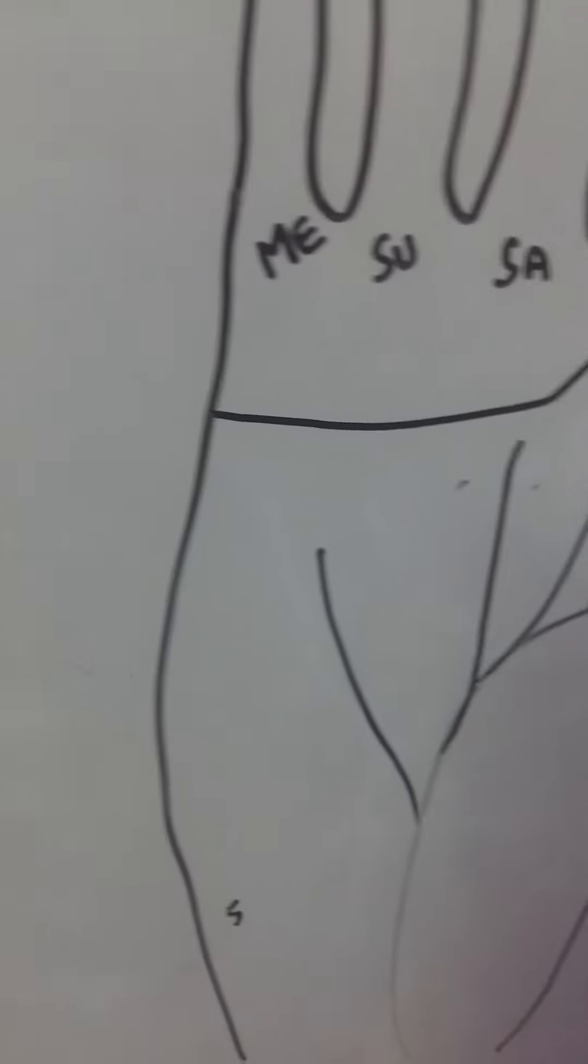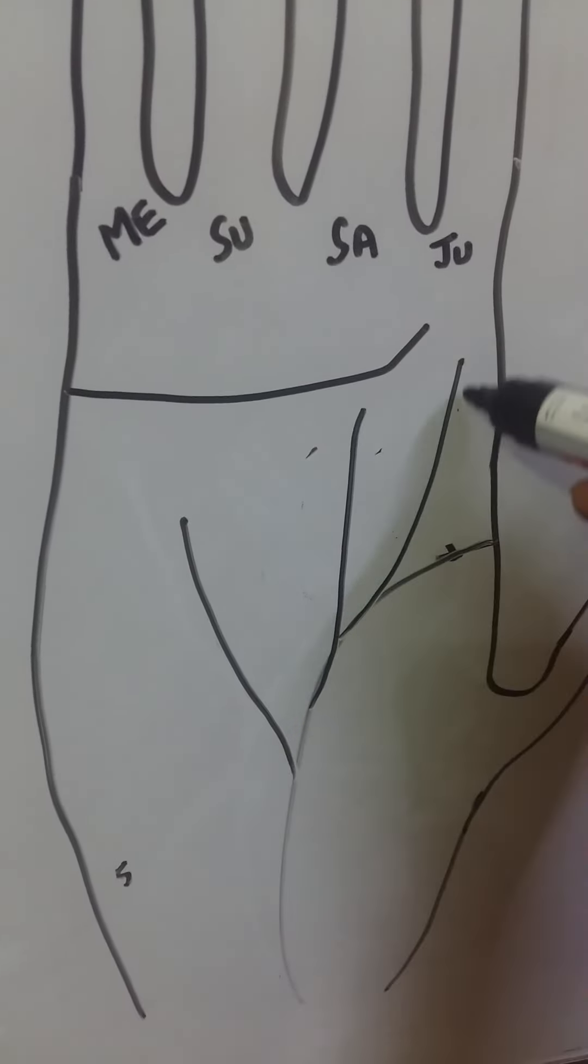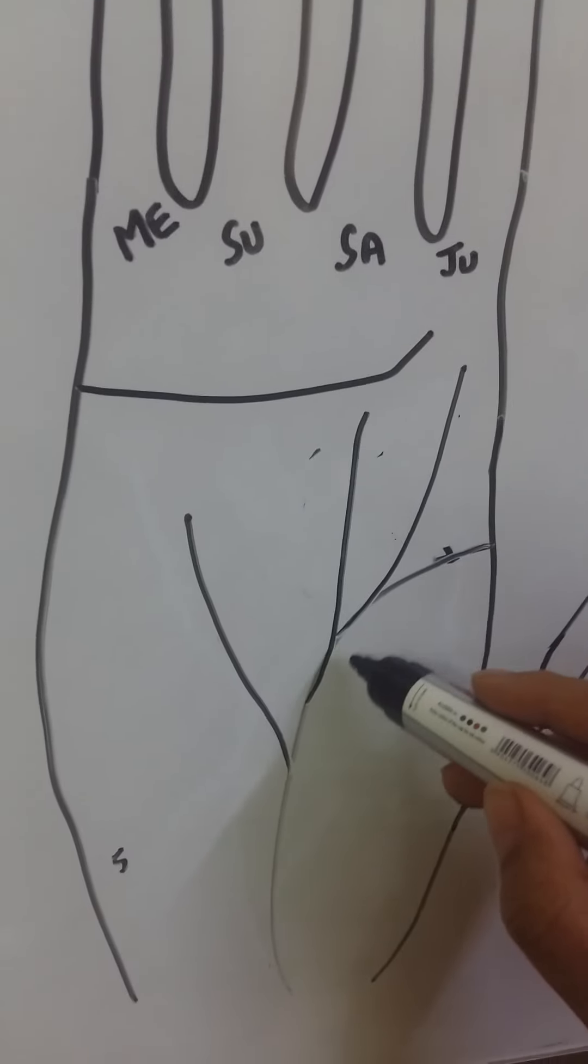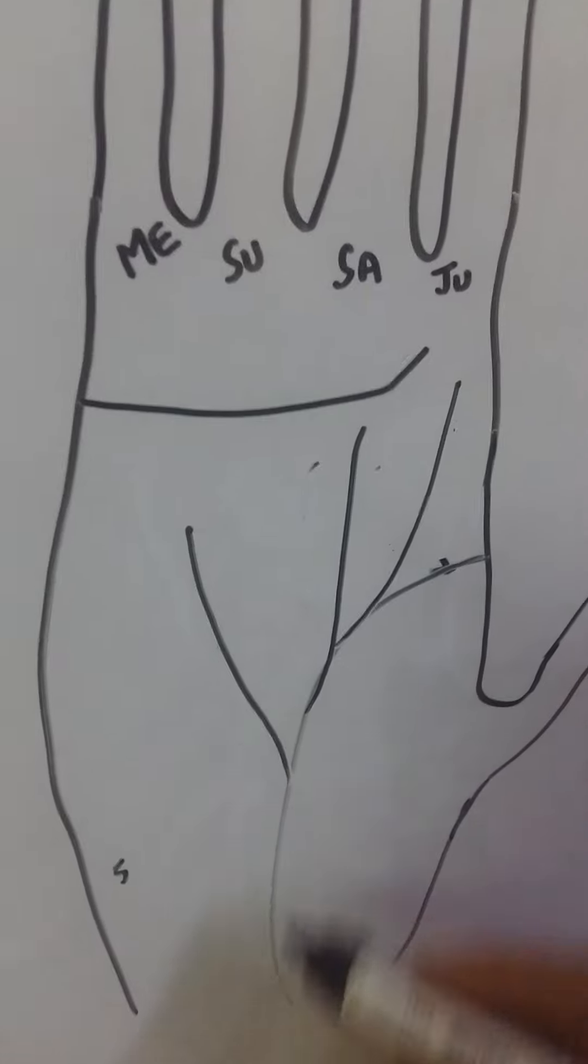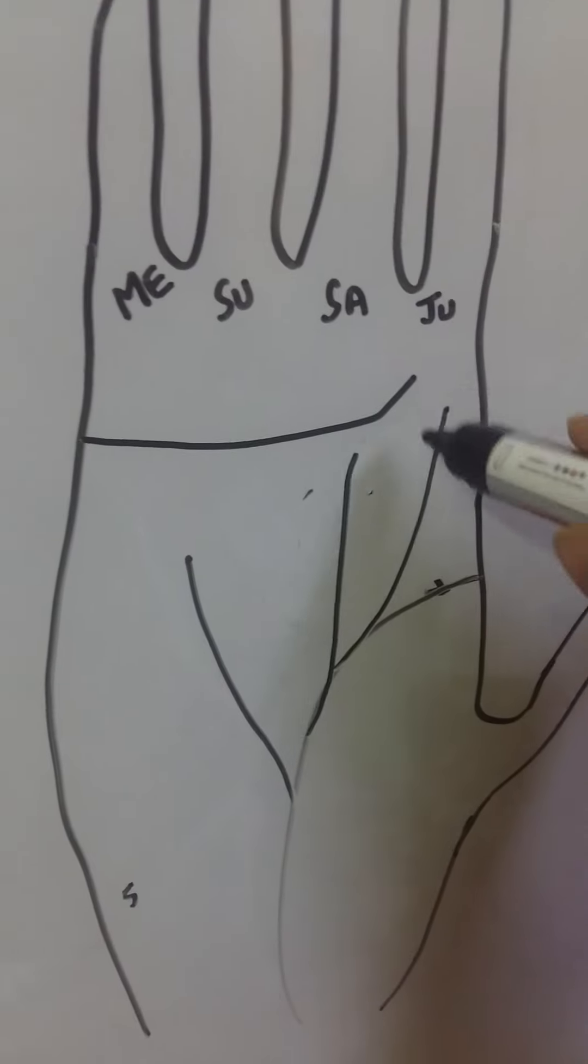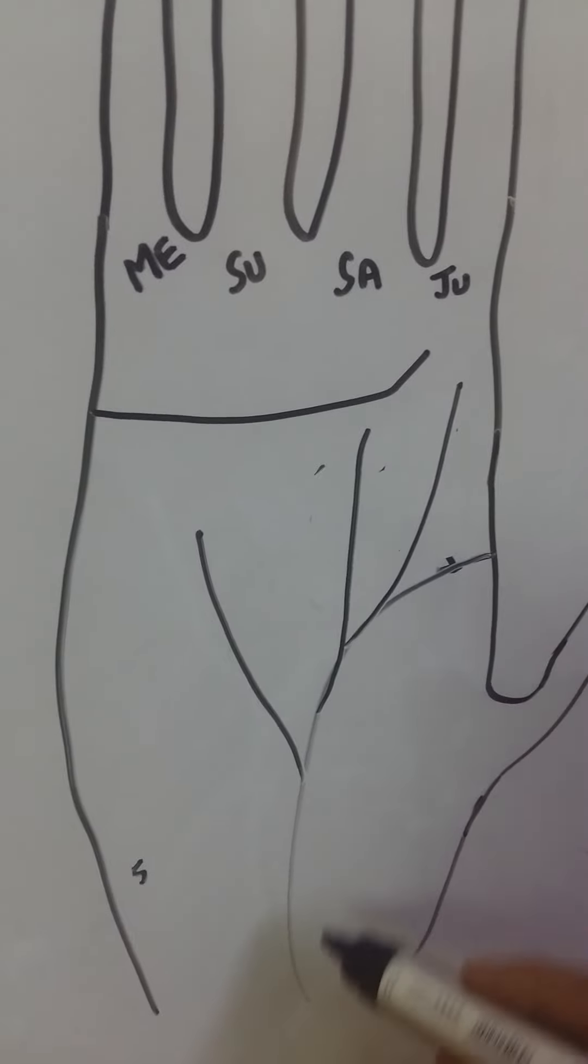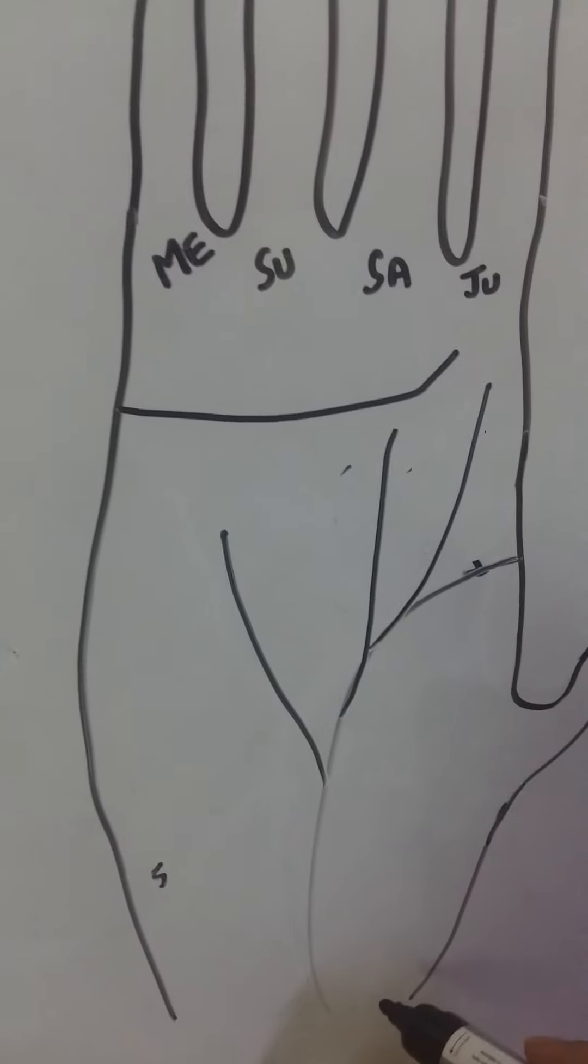Like this, if you see a line emerging from here towards your Jupiter mound, it means the person will get success in their 20s, 25, near 25. So, you have to check thoroughly in your palm that at what age these lines are appearing.